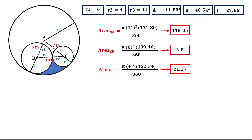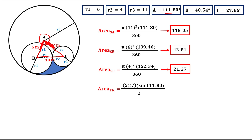The last area needed is the area of the triangle. Using the two sides of 5 and 7 with the included angle, we have one-half times 5 times 7 times sine of angle A, which is sine of 111.80 degrees, divided by 2. The area of the triangle is 16.25.